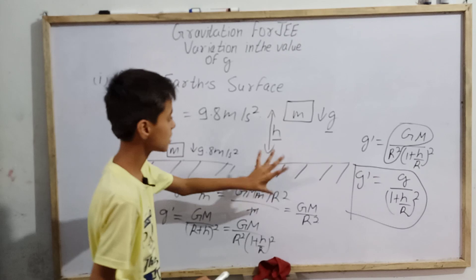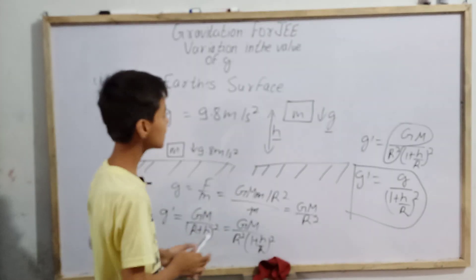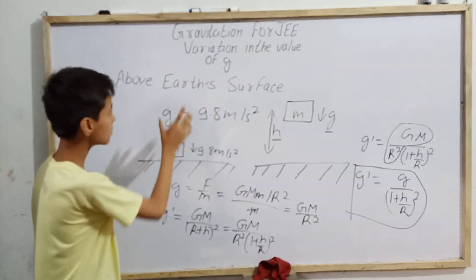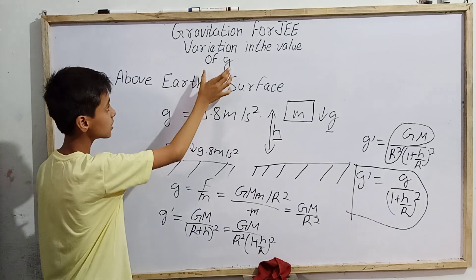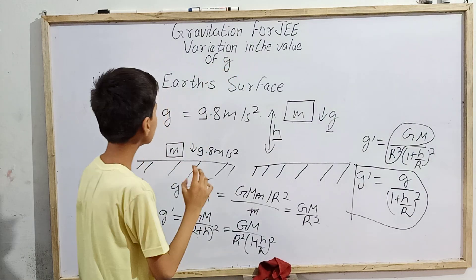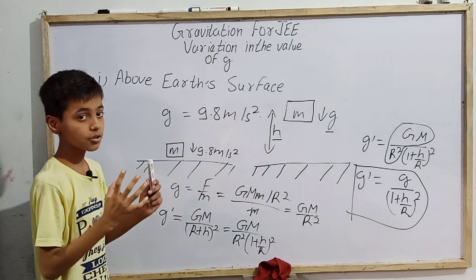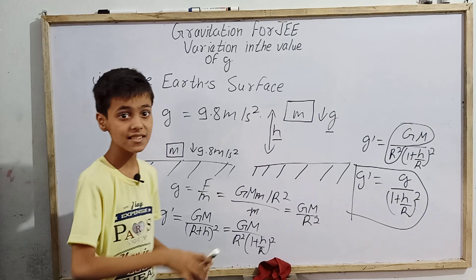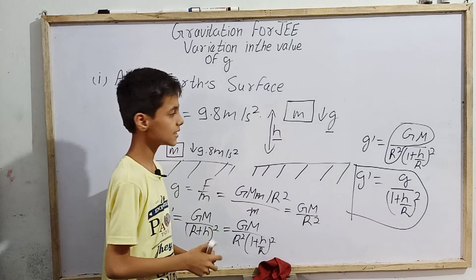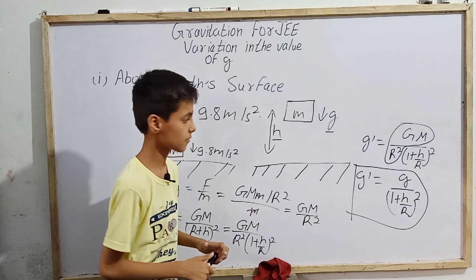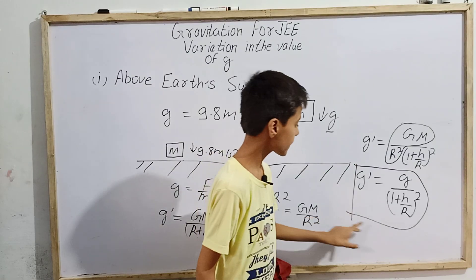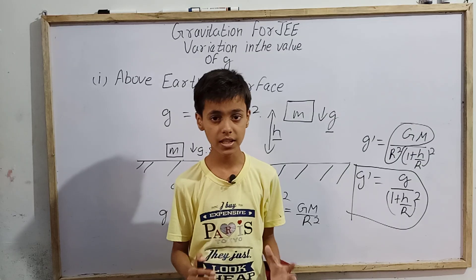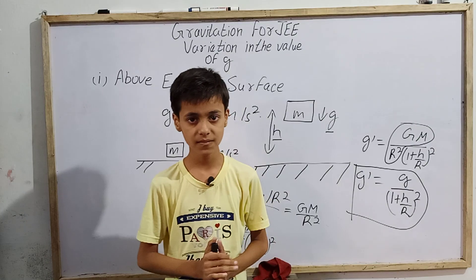So this is our final expression for g' — the value of acceleration due to gravity at a height h above Earth's surface. In our next videos, we will study how the value of g may vary due to the rotation of Earth, and how it may vary as we go into the depth of Earth's surface. Thank you.